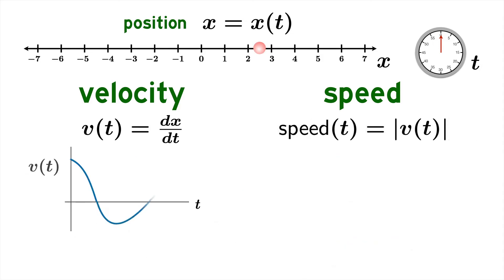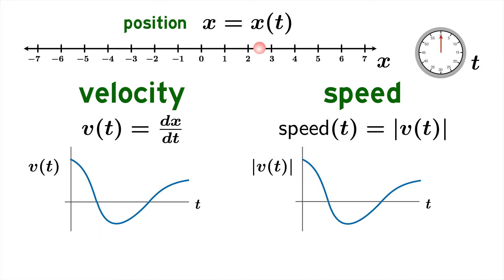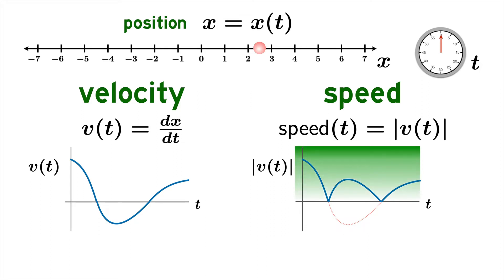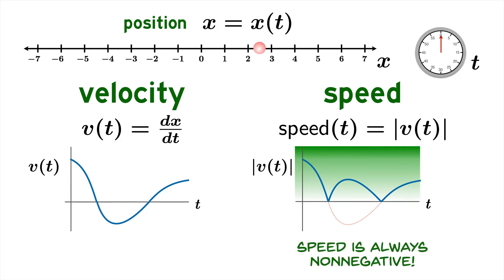A velocity graph can dip above or below the horizontal axis. But if you want to look at the associated speed graph, whatever parts of the velocity graph lie below should simply be flipped above because we're taking the absolute value. So the values of a speed function are always greater than or equal to zero — in other words, speed is always non-negative.